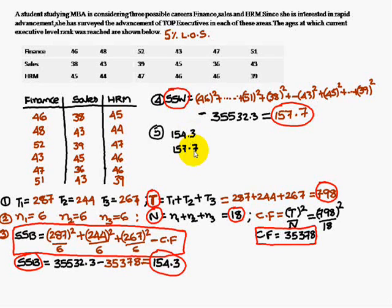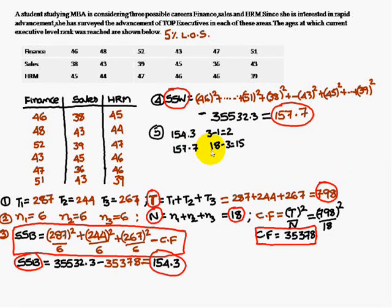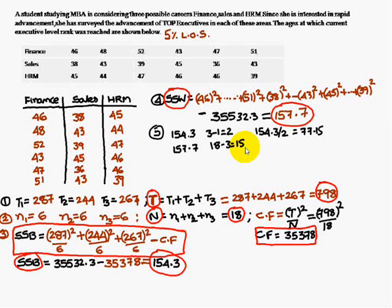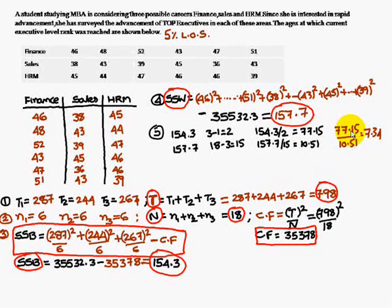In step five, we write SSB = 154.3 and SSW = 157.7. For SSB, we have three MBA streams, so degrees of freedom = 3 − 1 = 2. For SSW, total samples are 18 minus number of streams 3, giving degrees of freedom = 15. Dividing: 154.3 / 2 = 77.15 and 157.7 / 15 = 10.51.